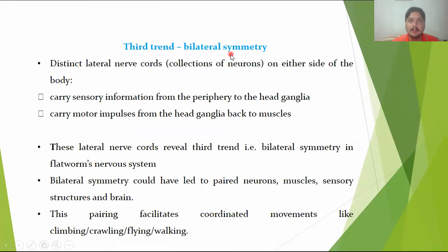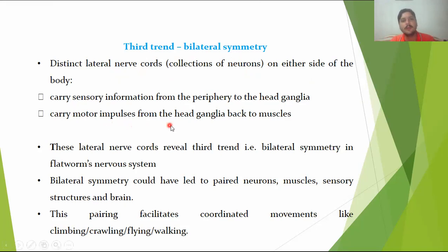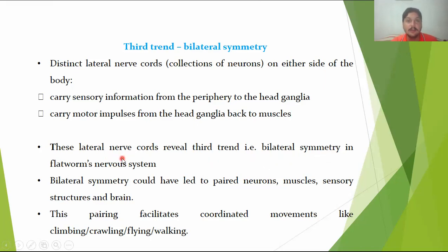The third evolutionary trend is the presence of bilateral symmetry. This is a very important character. Bilateral animals are those that can be cut into two equal halves when a plane of division passes through the central axis. Only a single plane of division can pass through a bilateral animal and divide it into two mirror images — the right image and the left image. Distinct lateral nerve cords are present on both sides, and sensory information is carried to the head ganglion.